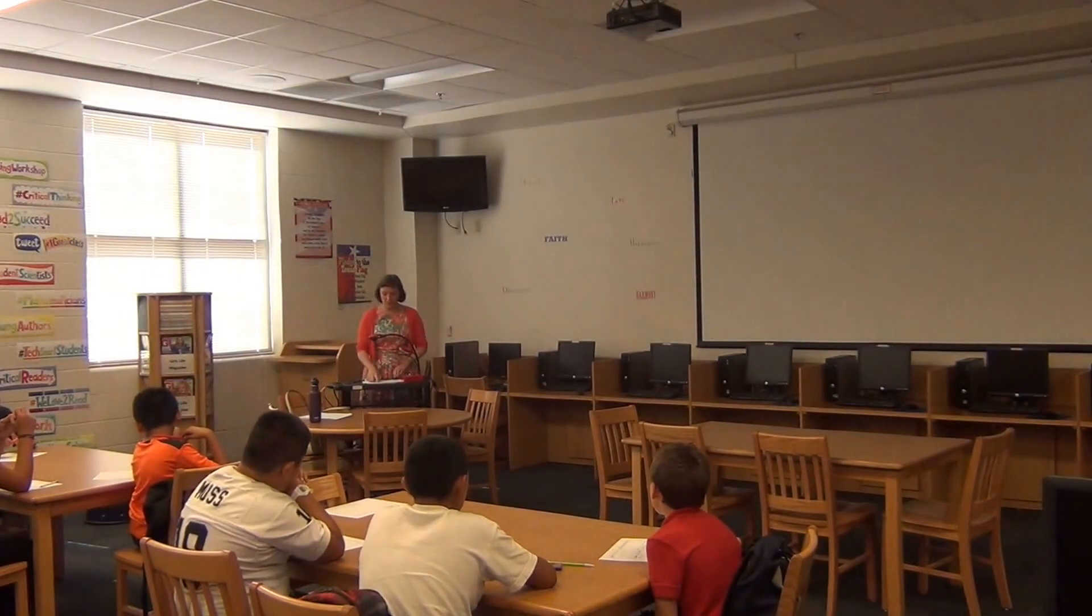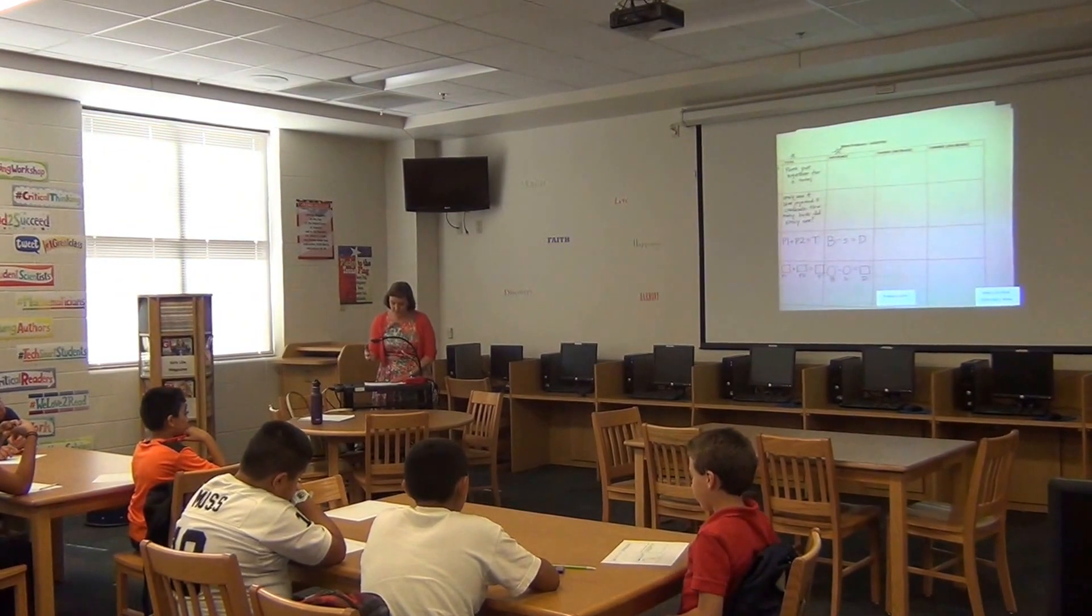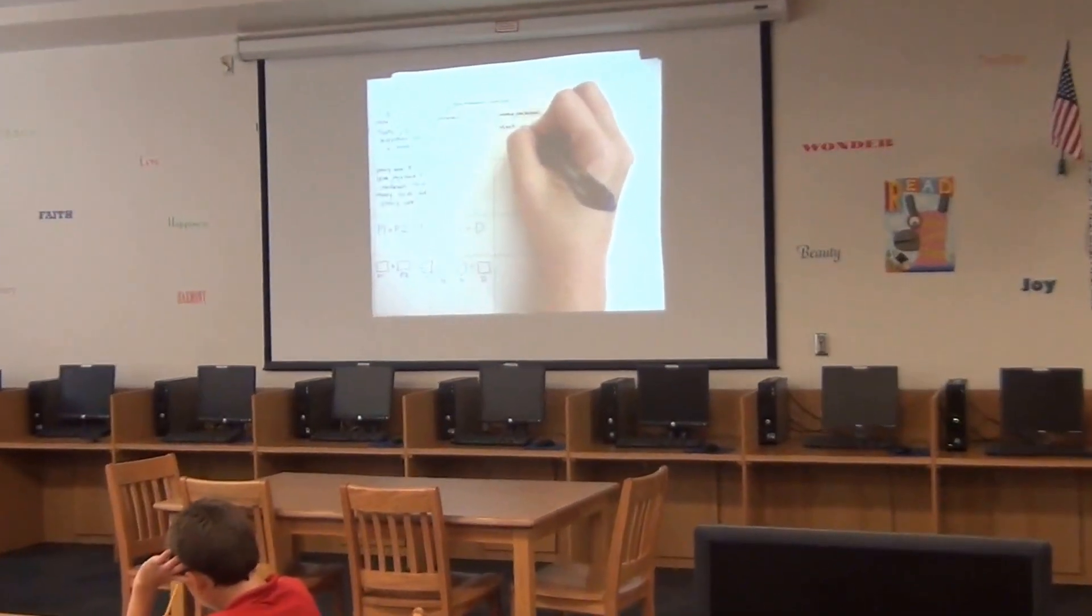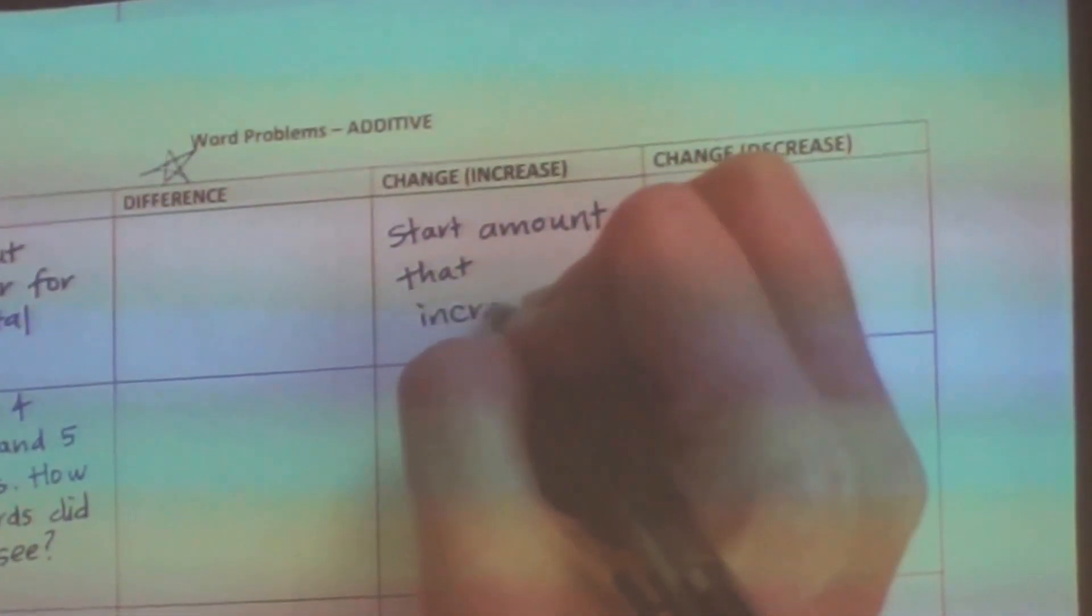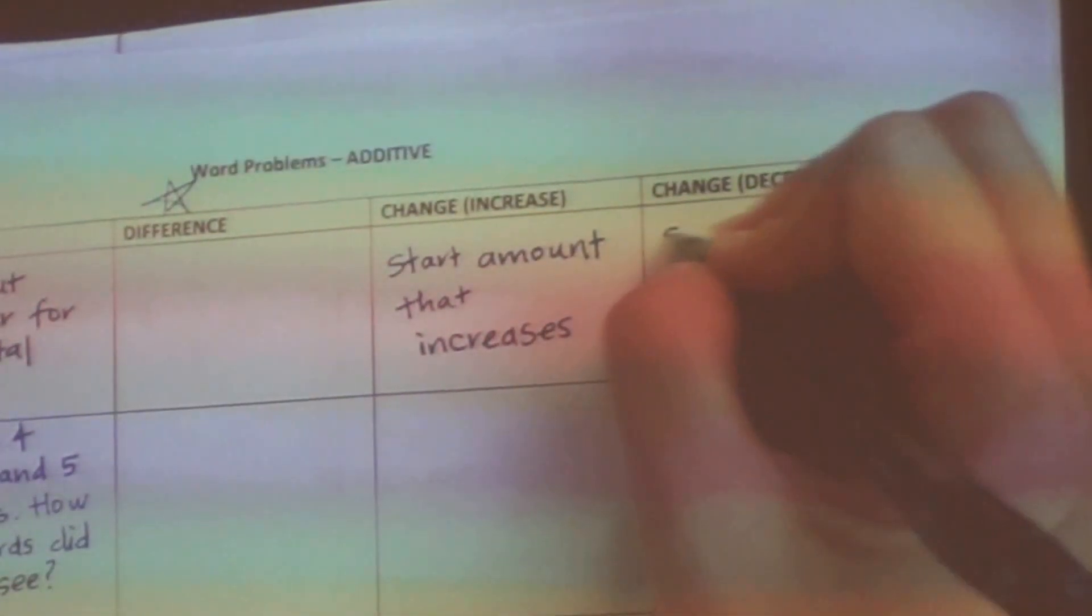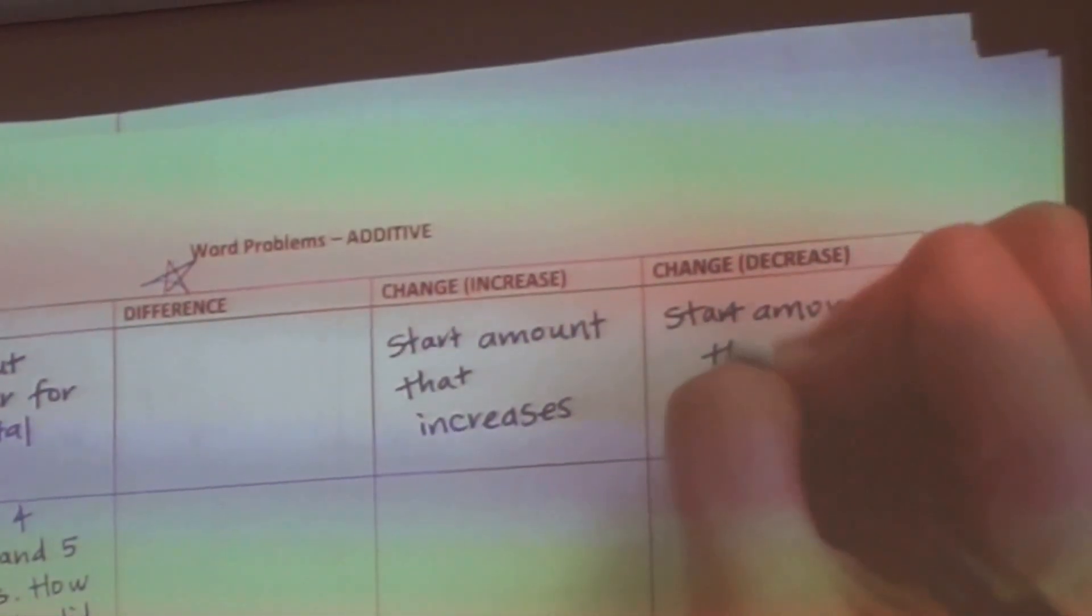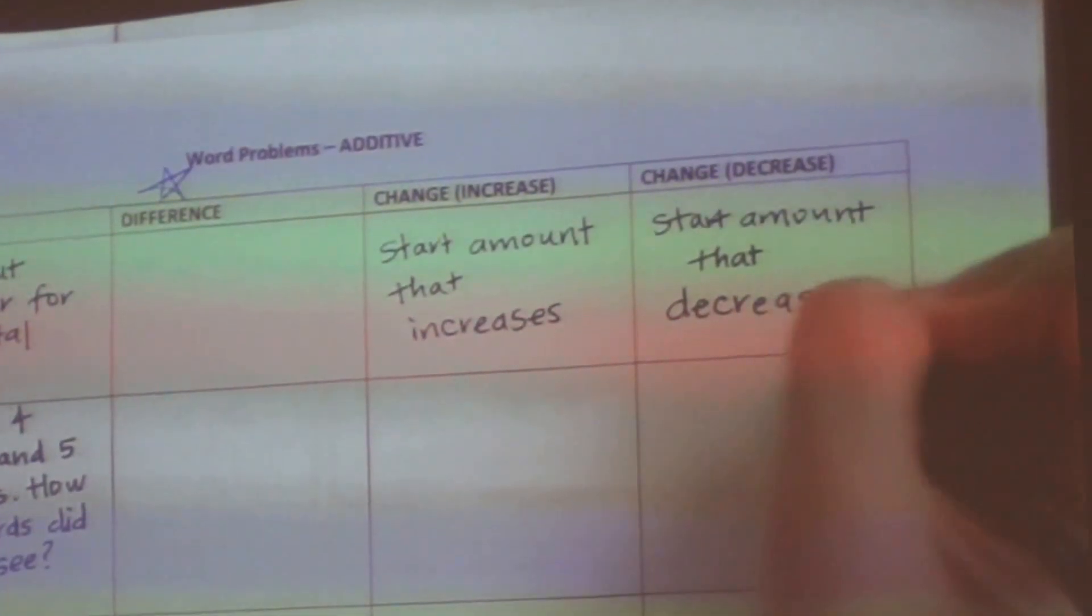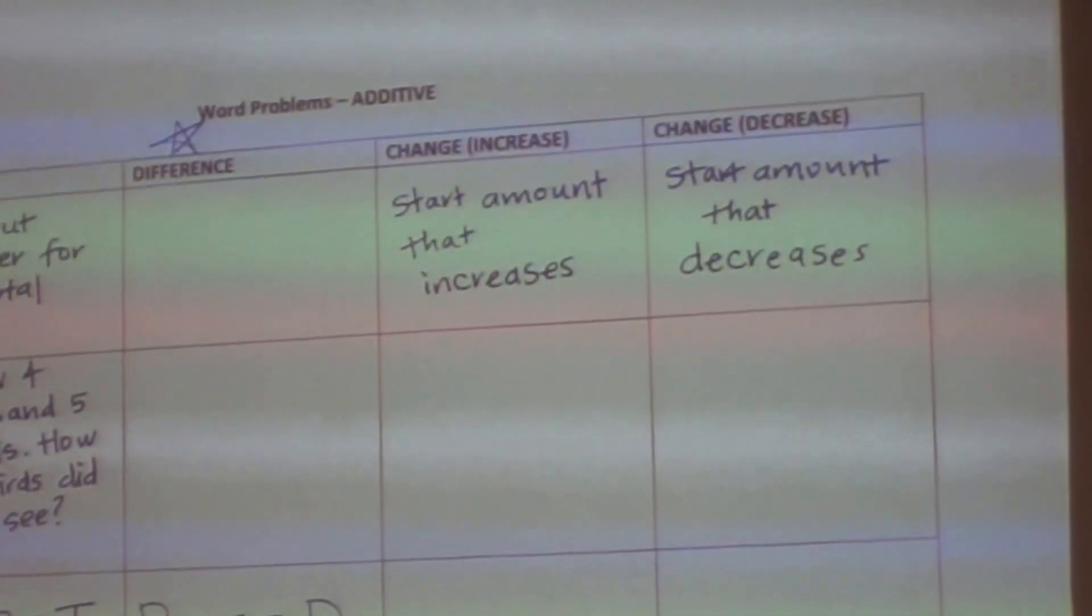Let's look at our graphic organizer here and fill in some of this information. In a change problem, there is a start amount that increases. What's another way to say increases? You could also say gets bigger. And in a change decrease, there's a start amount that decreases. What's another way to say decreases? If something decreases, it gets smaller.